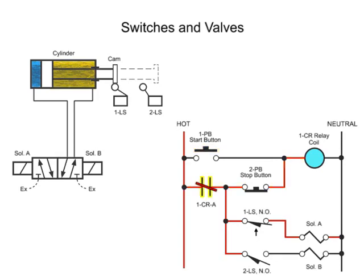When contacts 1CRA are closed, electrical power is distributed to the rest of the circuit. Since limit switch 1LS is held closed by the cam prior to the beginning of the cycle, current flows through this switch and activates solenoid A. Since limit switch 2LS is open prior to the beginning of the cycle, current cannot flow and thus solenoid B remains de-energized.